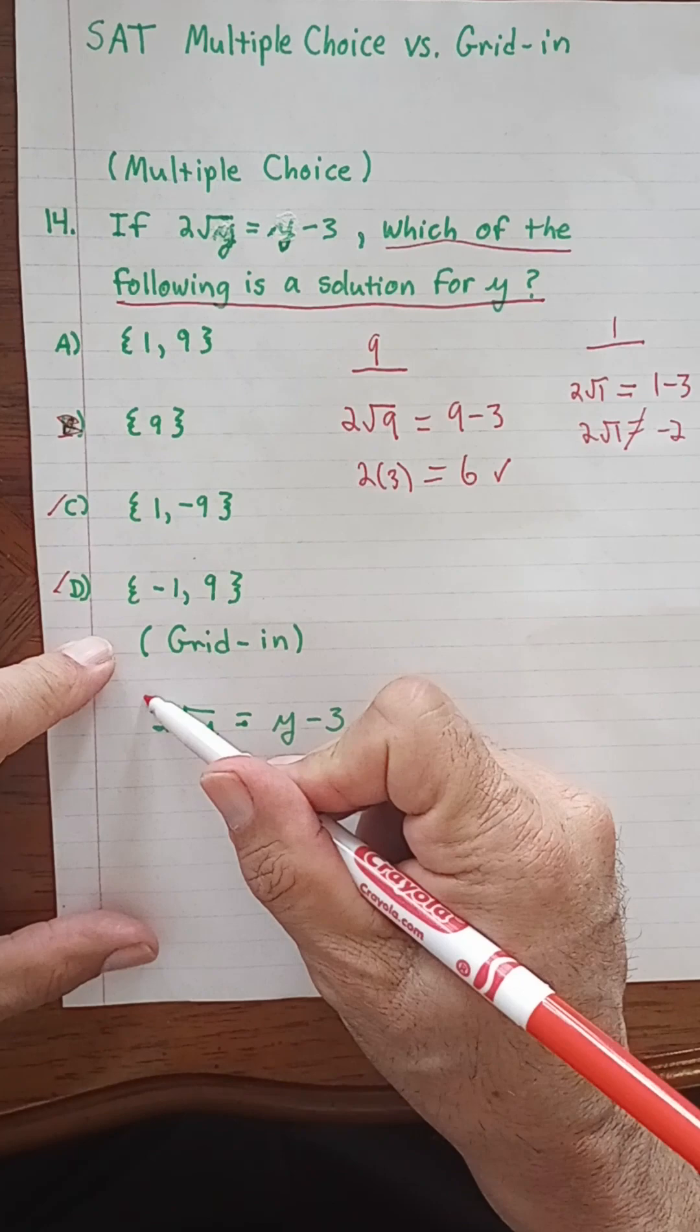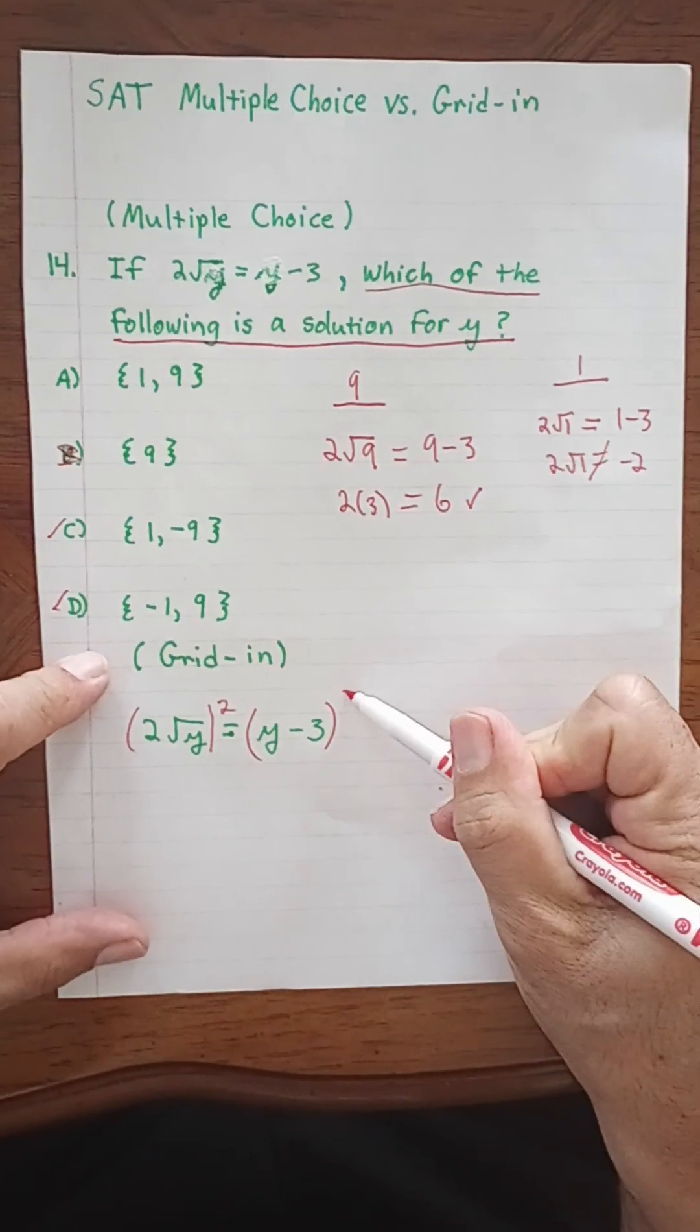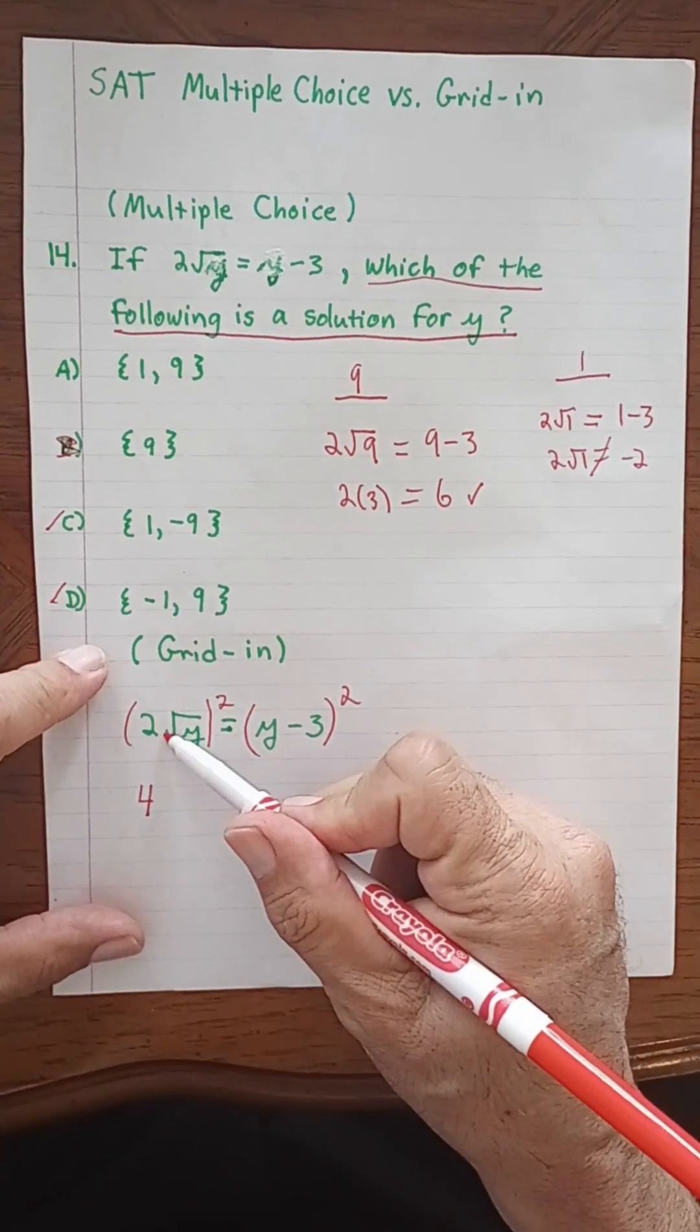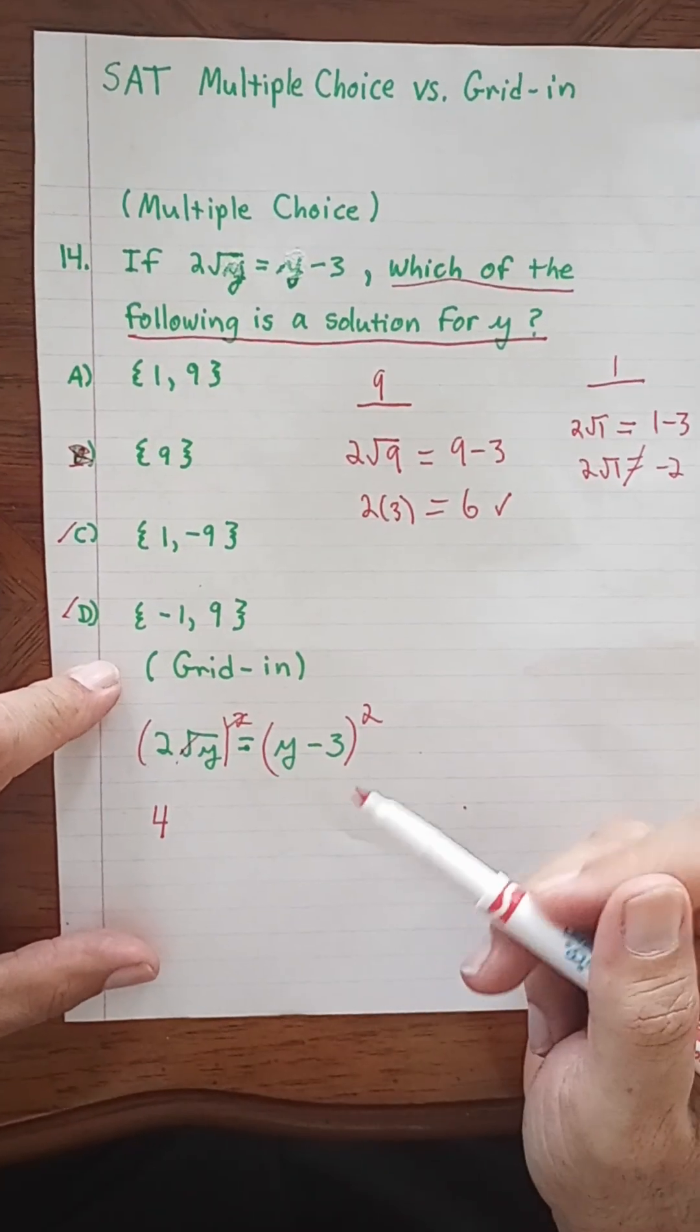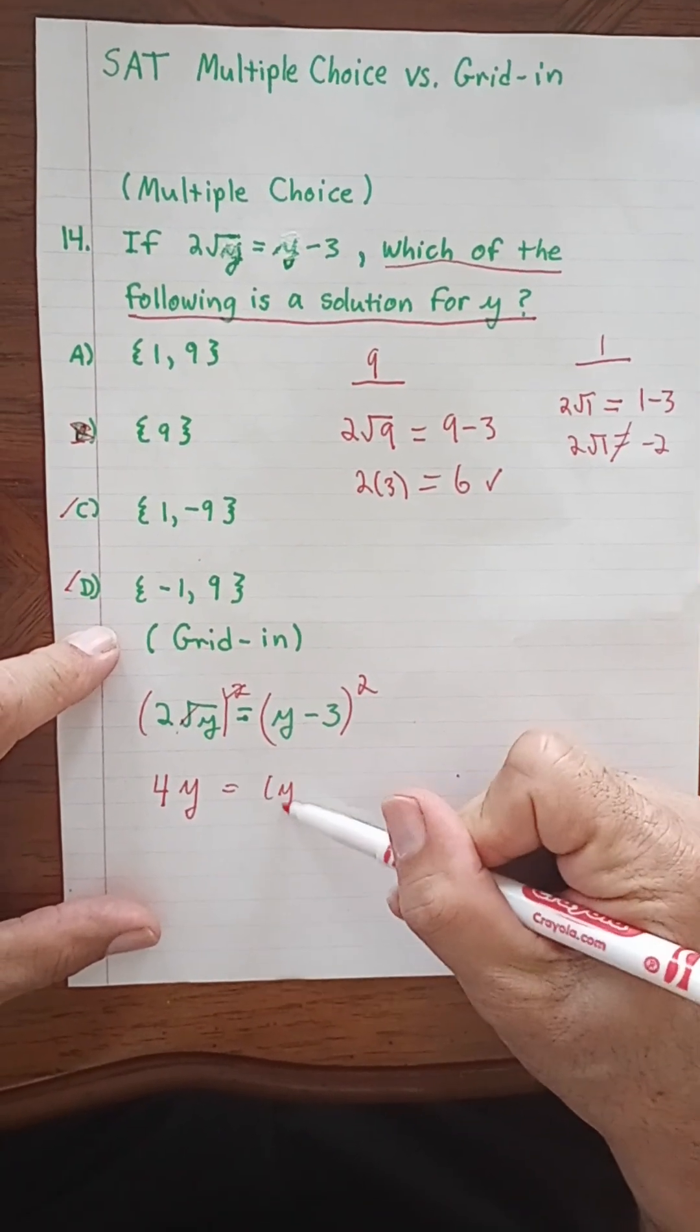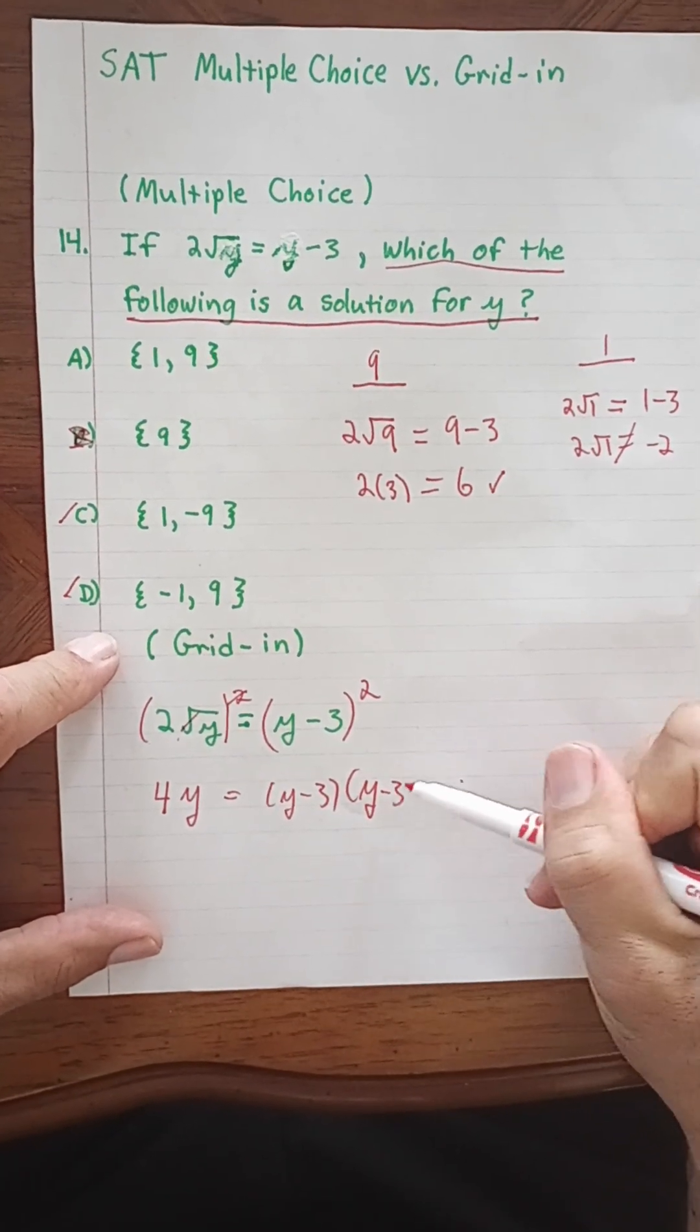If we square both sides, this becomes 2 squared, which is 4. And then the square root of y and the square root sign, and the exponent cancel, and we get y. So that's 4y. And then here we would get y minus 3 times y minus 3.